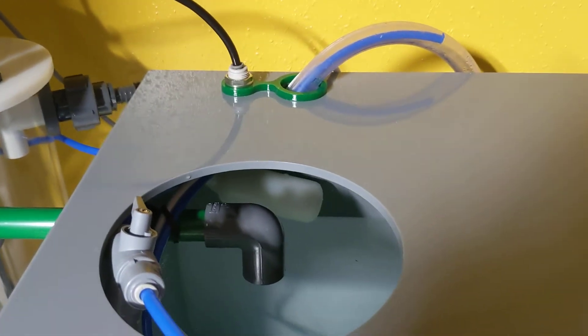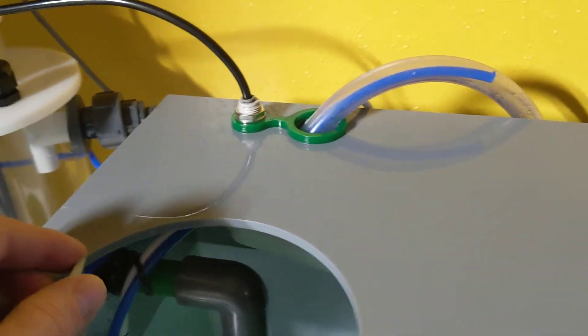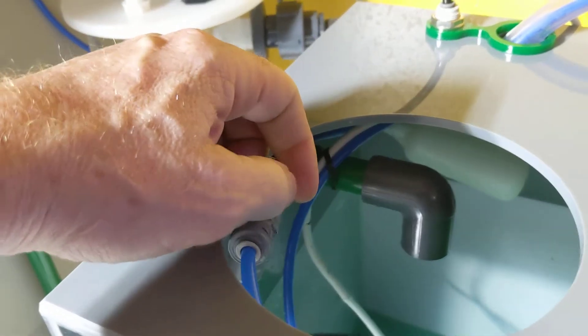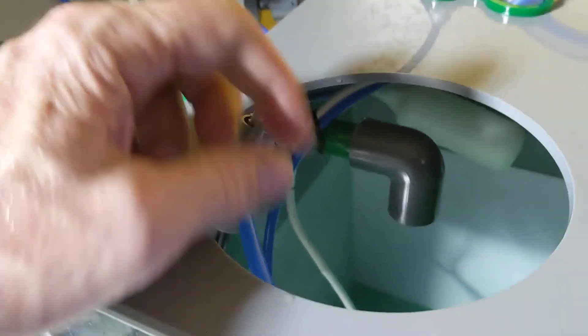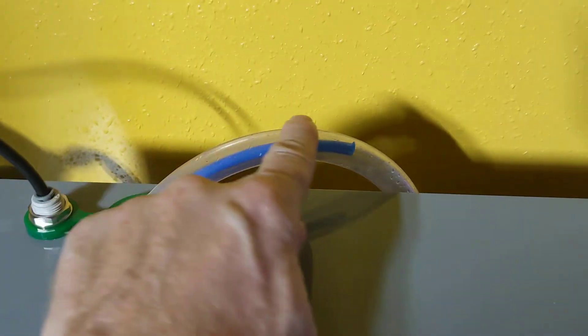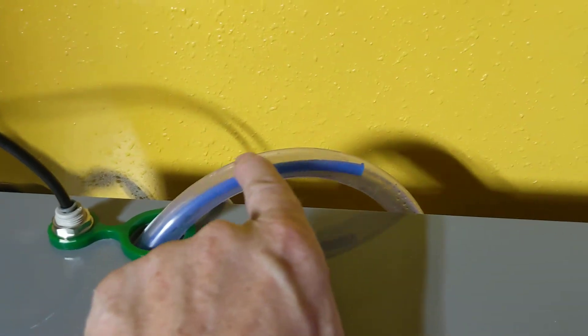If I ever need to just dose pure RO water, I can flip this valve, 3-way valve here, and that is going to switch my output to right here. This again is for a siphon break. And that again goes to my sump through the wall.